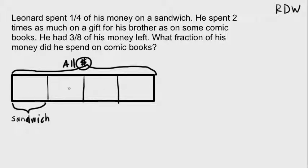Now we have Leonard and all of his money and he spent a fourth of it on a sandwich. And this is a fourth, right? One, two, three, four. So it says he spent two times as much on a gift for his brother as on comic books. I don't really know what that means, so I'm going to wait.